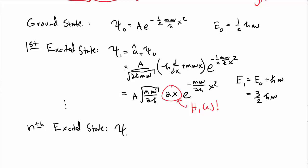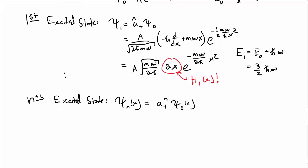And so on and so forth. So the nth excited state we can generate just by multiplying or operating on the ground state by n factors of A⁺.